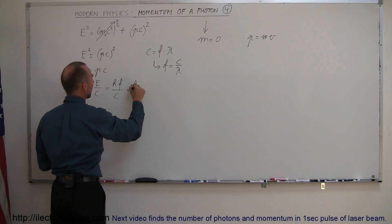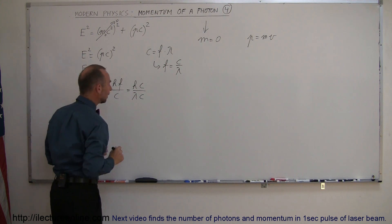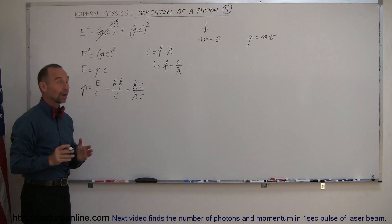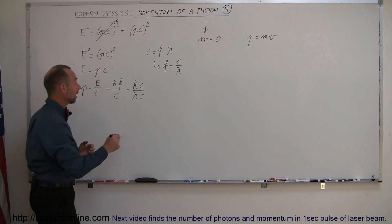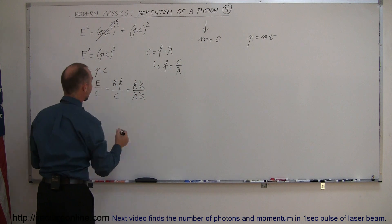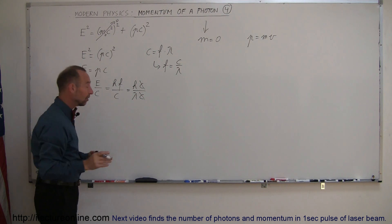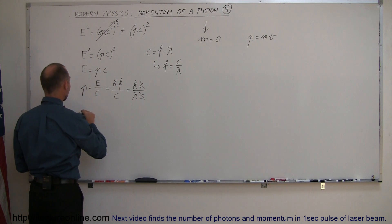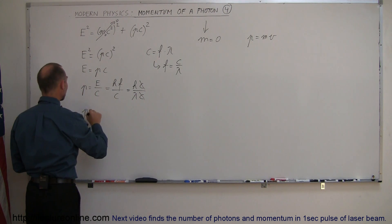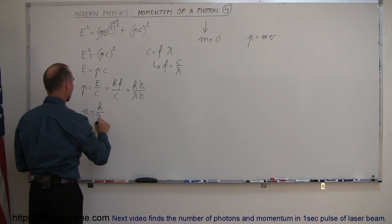Substituting frequency as C over lambda, we get H times C over lambda, divided by C from below. You can see right away that the C's cancel out. And finally, for a photon — a particle with no mass — we can see that the momentum is equal to Planck's constant divided by the wavelength.